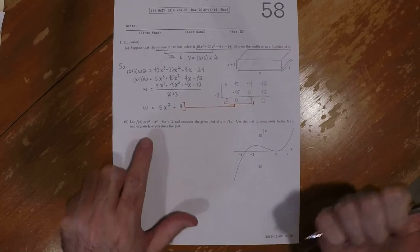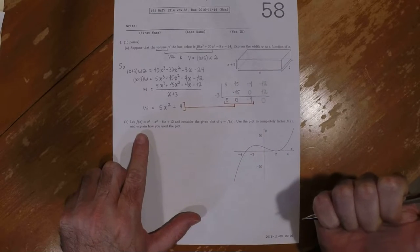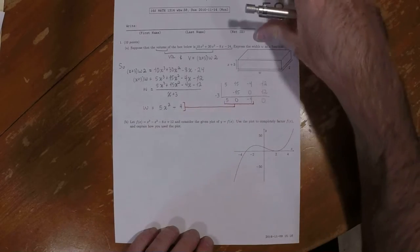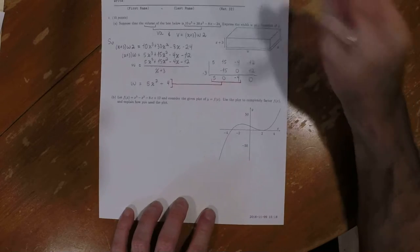So we're given a polynomial function and a plot of this polynomial function. Use the plot to completely factor f and explain how you use the plot.